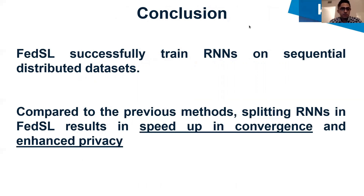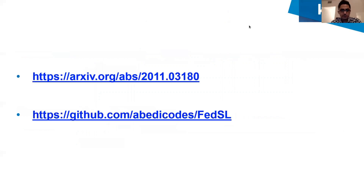As we saw, federated split learning successfully trained recurrent neural networks on multiple segment sequential data. Compared to previous methods, splitting recurrent neural networks in the federated split learning method results in a speedup in convergence and enhanced privacy. These are the links to our paper and the code for the implementation.